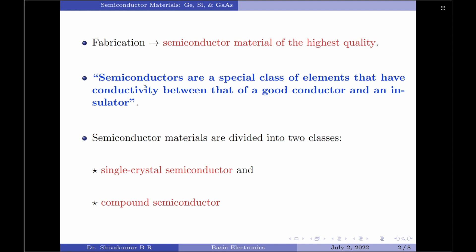The first one is called the single-crystal semiconductor and the second one is the compound semiconductor. Let us now very briefly look into what is a single-crystal semiconductor and what is a compound semiconductor.